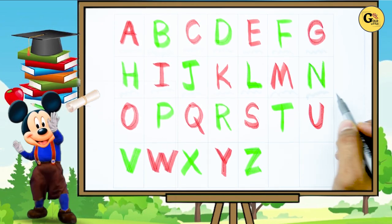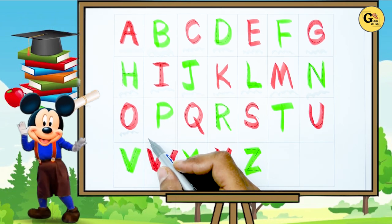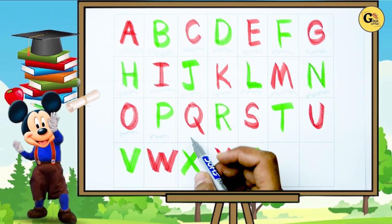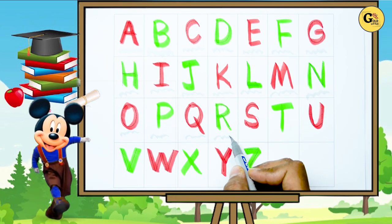N, N for nest, O, O for octopus, P, P for parrot, Q, Q for queen, R, R for rabbit.